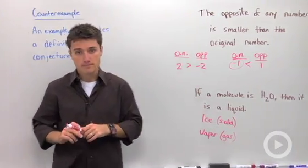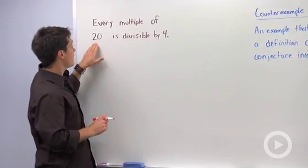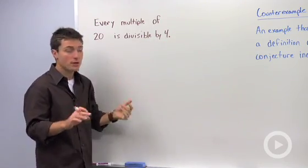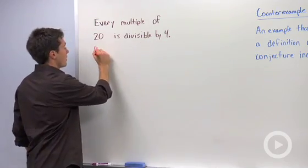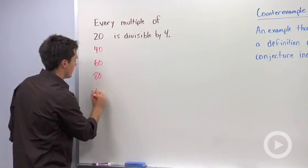Let's look at one more. In this statement, we're talking about multiples of a number. Every multiple of 20 is divisible by 4. So I guess we could think about multiples of 20, we say 20, 40, 60, 80, and so on.